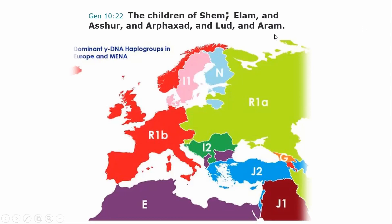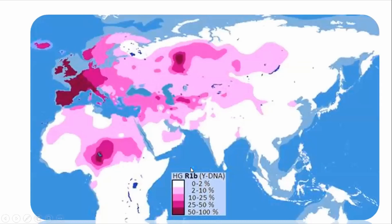Right up here is where the Jews that live in Jerusalem now descended from. This was their original place. They eventually moved themselves over into Russia — most of them would be in Russia and in Poland. You can even see it here. So that's who they are. Here's R1B — this is all the Israelites, and this is how far their DNA goes.